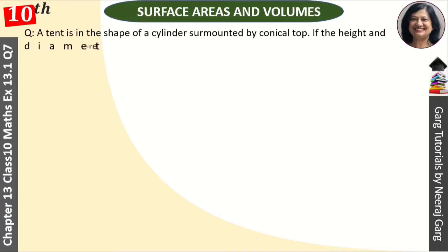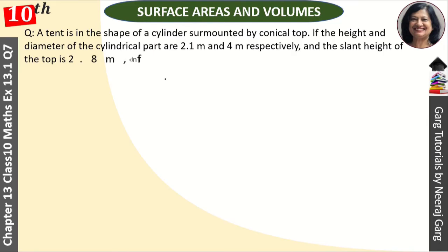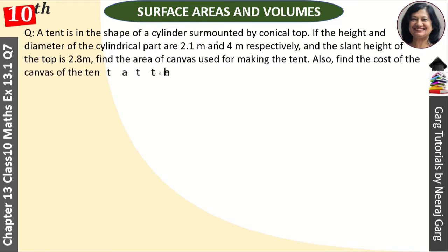Hi, this is Nidaz Gerg and you are watching surface area and volume. A tent is in the shape of cylinder surmounted by conical top. If the height and diameter of cylindrical part are 2.1 meter and 4 meter respectively and the slant height of the top is 2.8 meter, find the area of canvas used for making the tent. Also find the cost of canvas of tent at rate of rupees 500 per meter square.